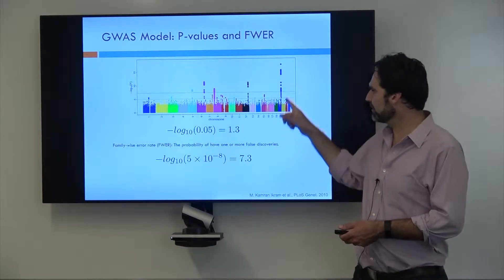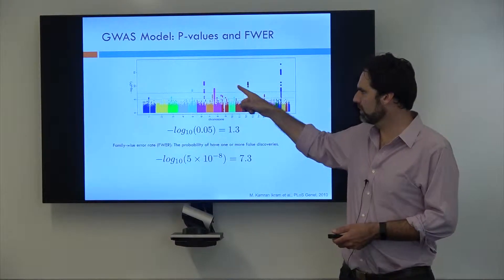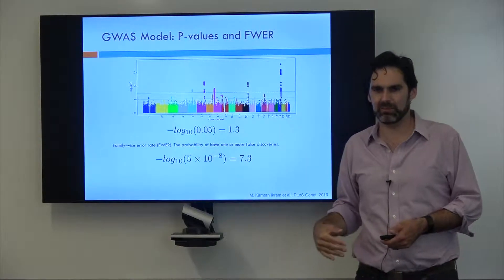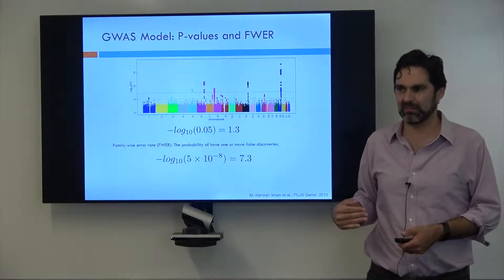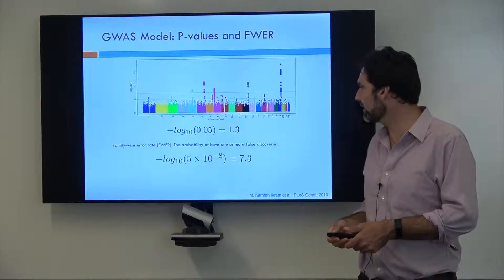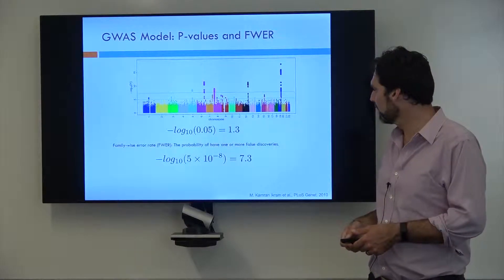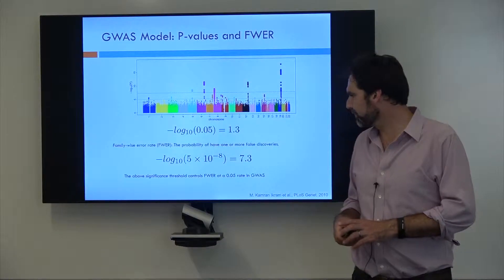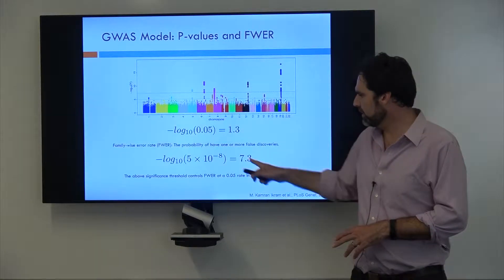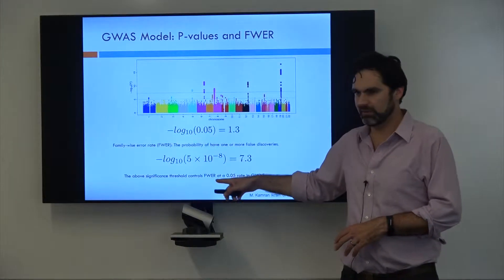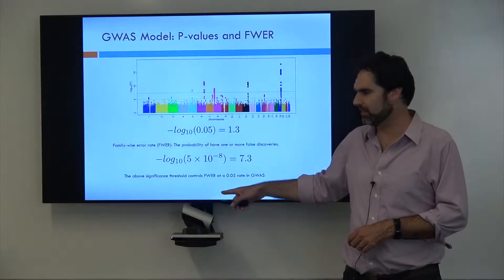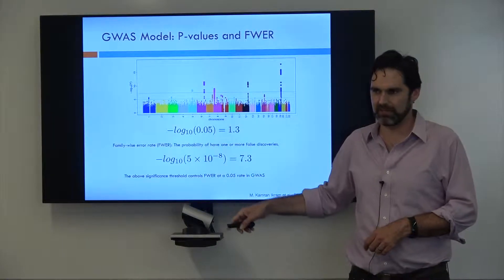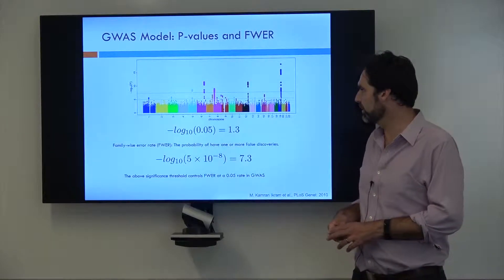which is this dashed line up here. And as you can see, there are actually only a few locations on this plot where you have variants with a p-value more significant than that. And if we use this significance threshold, then we're actually controlling the family-wise error rate at 0.05, which is what we want to do.